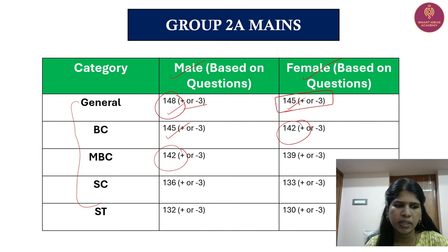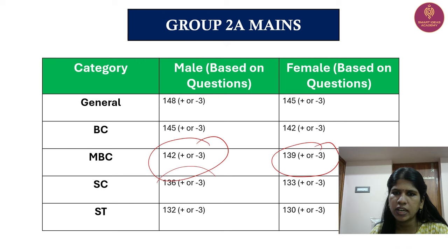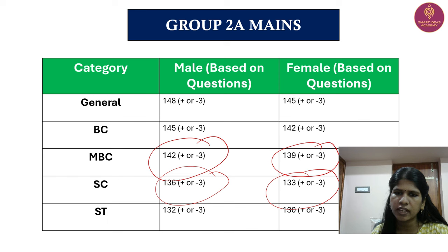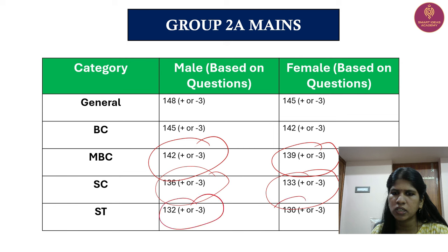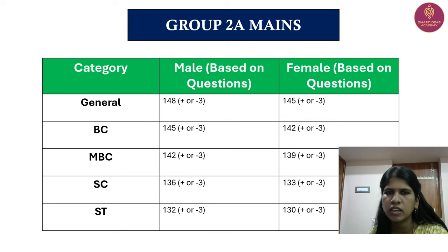MBC is 139. SC candidate is 136 plus or minus 3, and 133 plus or minus 3. For PSTM, where the category gets 5 marks, you can correct for female. STM is 132 plus or minus 3, and 130 plus or minus 3.